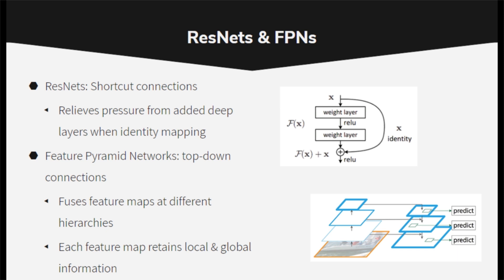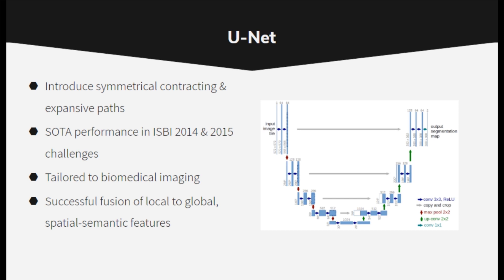FCNs also draw from prior insights of skip connections of ResNets and lateral top-down hierarchical feature map connections of the feature pyramid networks. UNET leverages the FCN structure to achieve state-of-the-art performance in ISBI challenges and is ideal for biomedical imaging.